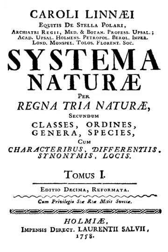Linnaeus, later known as Karl von Linné after his ennoblement in 1761, published the first edition of Systema naturae in the year 1735 during his stay in the Netherlands. As was customary for the scientific literature of its day, the book was published in Latin. In it, he outlined his ideas for the hierarchical classification of the natural world, dividing it into the animal kingdom, the plant kingdom, and the mineral kingdom.